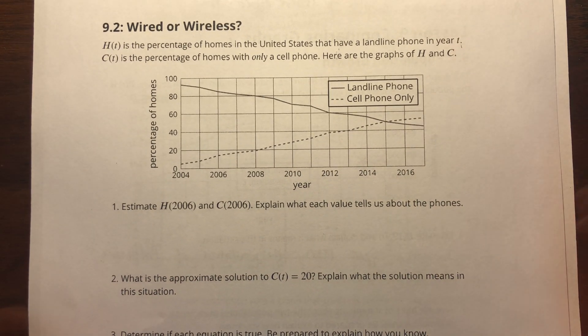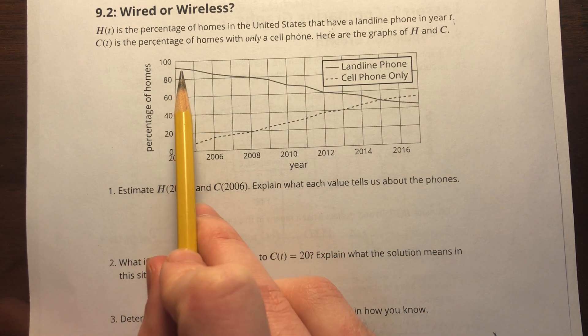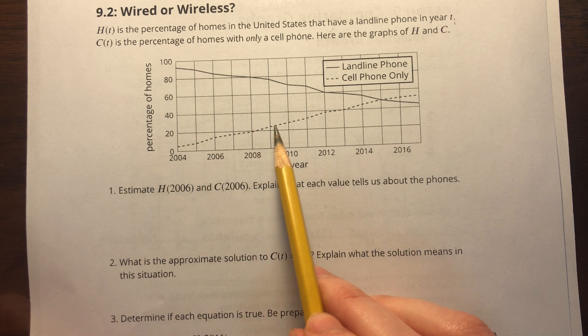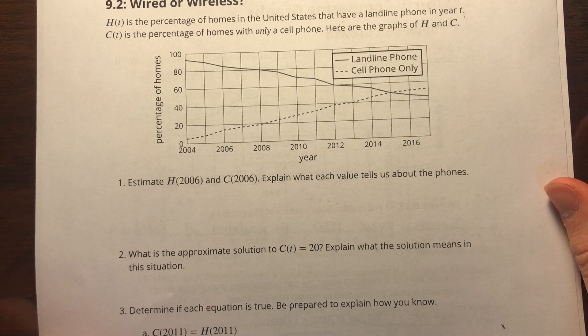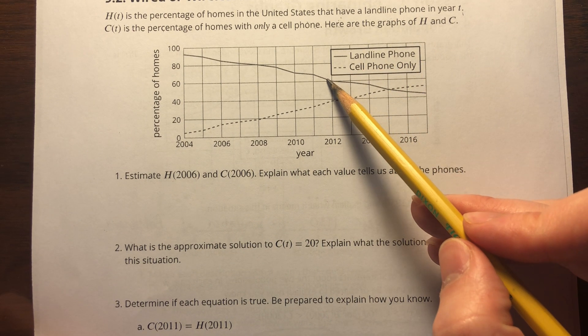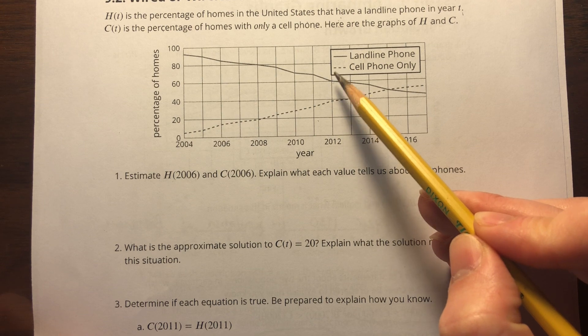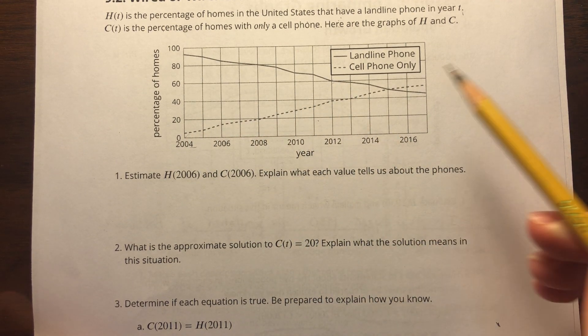Everyone pretty much has a cell phone nowadays. We can actually see from the graph that since the year 2000, less and less people have been using landline phones and more and more people have been having cell phones only. What's also being implied is that you can have a landline and a cell phone and you'll be counted for the landline, but this one means no landline at all but you have to have a cell phone.